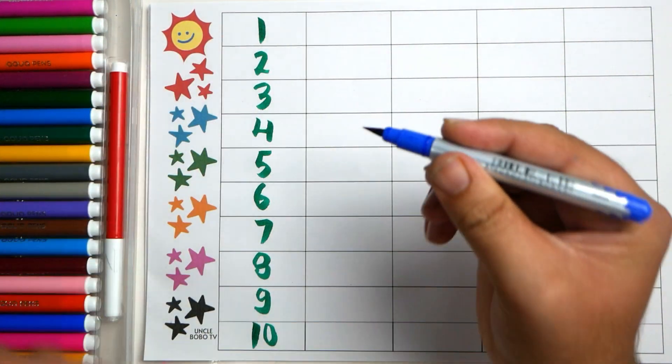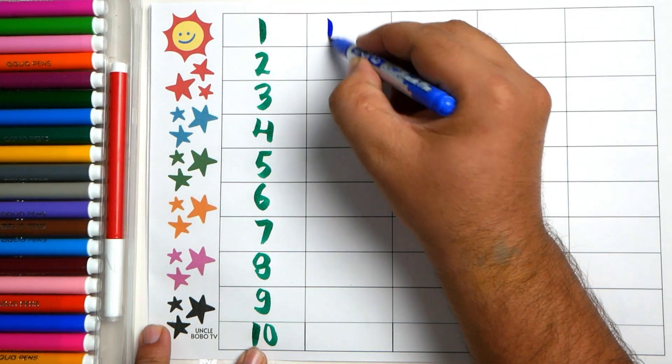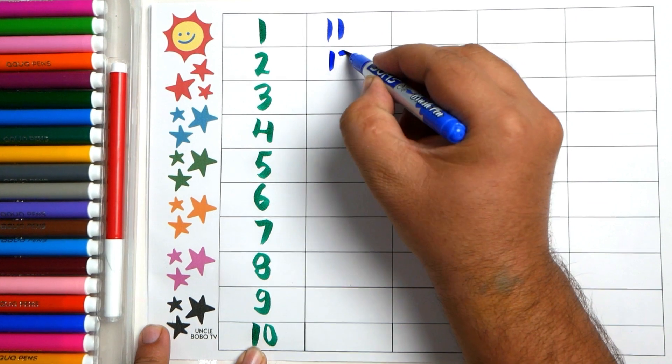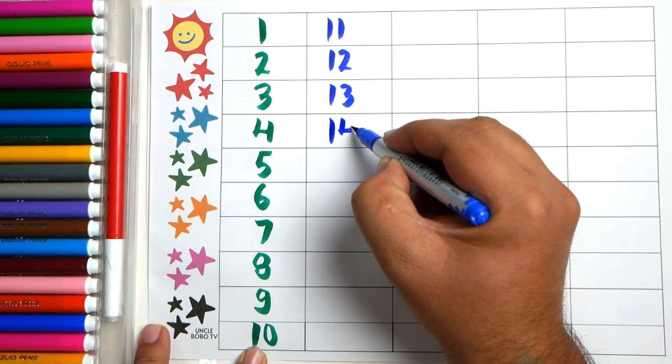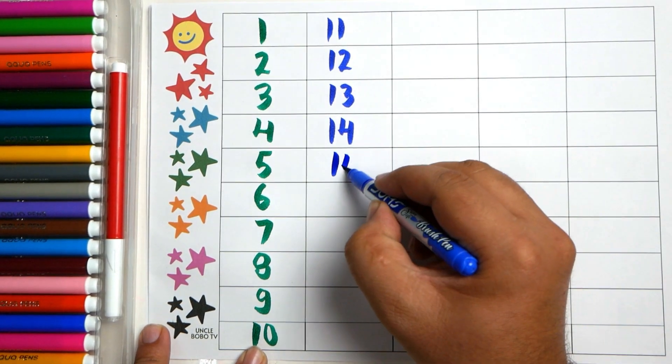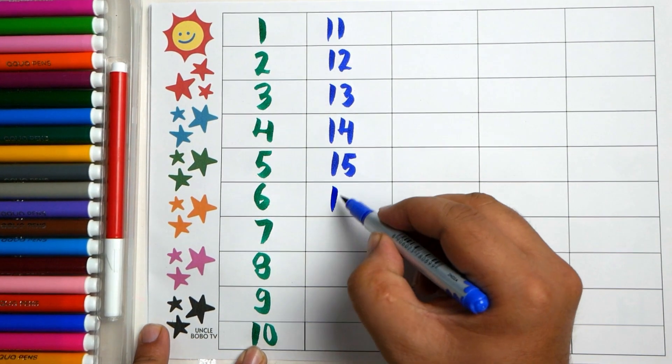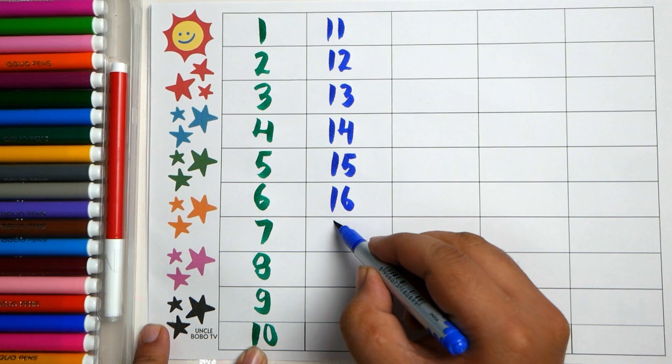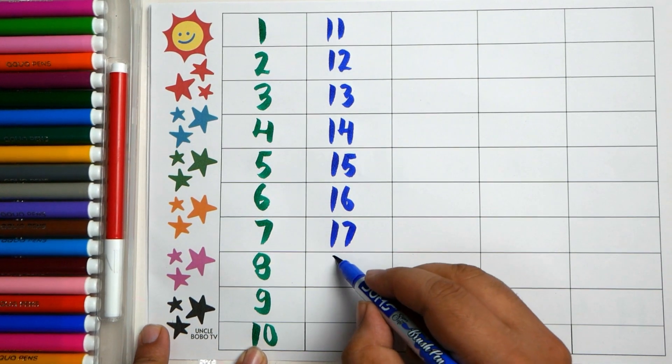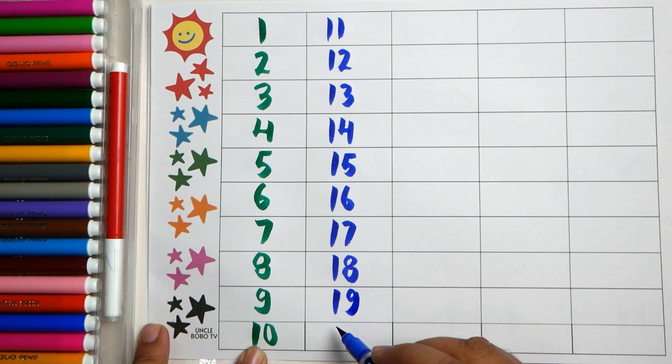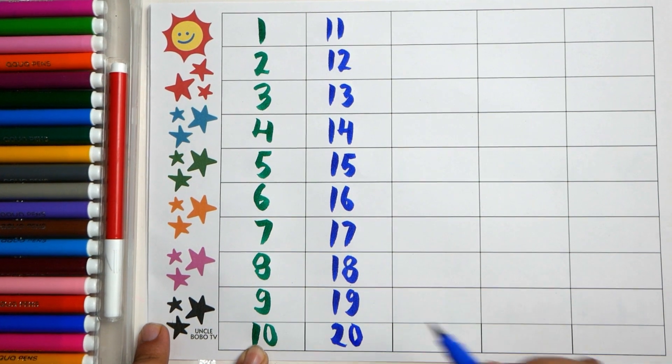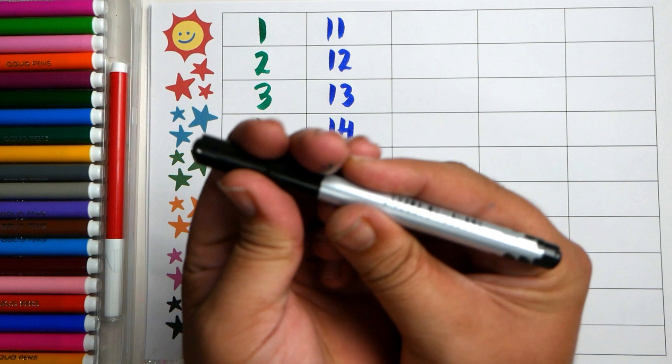Dark blue color. Eleven, twelve, thirteen, fourteen, fifteen, sixteen, seventeen, eighteen, nineteen, twenty. Black color.